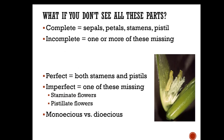A complete flower has sepals, petals, stamens, and pistils. An incomplete flower is missing one or more of these parts. A perfect flower has both stamens and pistils. An imperfect flower is missing one of these — they're either a staminate flower or a pistillate (carpellate) flower.